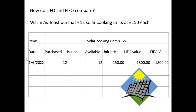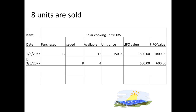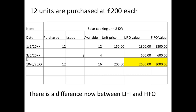You can see there's a difference between LIFO and FIFO values. In the second example, Warmer's Toast purchased 12 solar cooking units at £150 each — 12 times 150 is £1,800. At this point it doesn't matter whether you're using LIFO or FIFO; the value of inventory is the same. If we sell some, we're left with four units at £150, giving £600 — still the same under both methods. Now we buy 12 more units at £200 each, and you can now see a difference emerging between LIFO and FIFO.